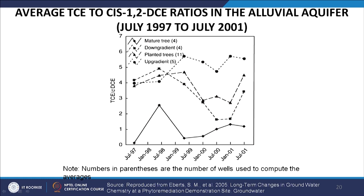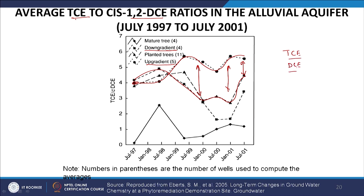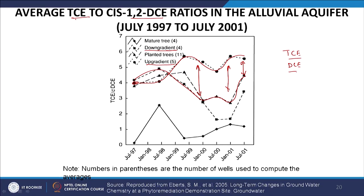Looking at average TCE to 1,2-DCE ratios in the aquifer, different trends are seen based on season. The up-gradient profile shows one pattern, while the down-gradient profile shows improvement with time. A lower TCE to DCE ratio is indicative of some level of degradation — meaning TCE is being converted to DCE. This provides some evidence of transformation taking place, since 1,2-DCE is a byproduct of TCE dechlorination.